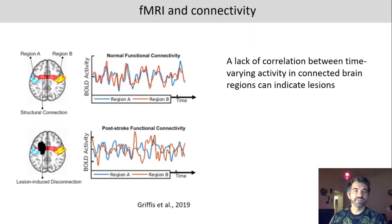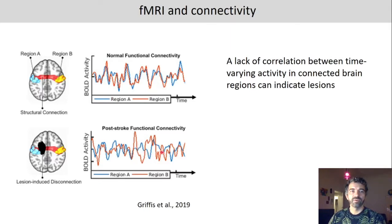Here's another illustration of the same principle. This shows normal functional connectivity between two regions. In a study of patients who had a stroke, the functional connectivity was no longer present — the regions were de-correlated, so sometimes one brain region was active when the other was not, and vice versa. Using fMRI, such disruptions in connectivity can be identified and related to a loss of functionality due to a stroke.